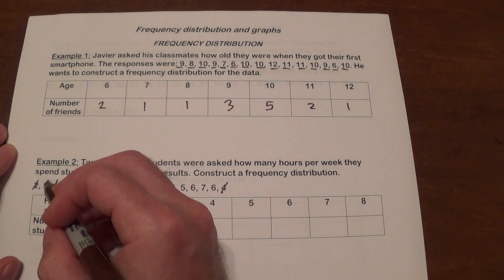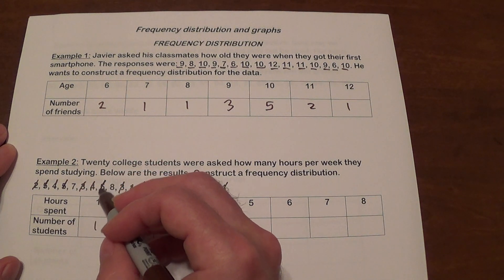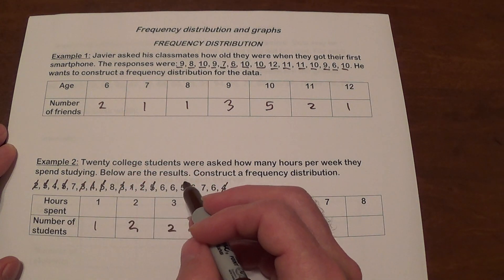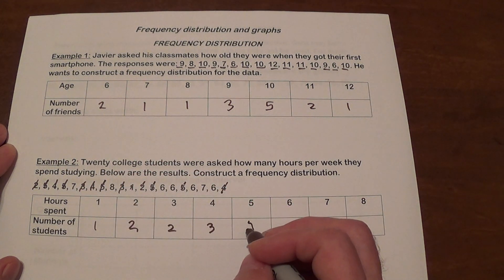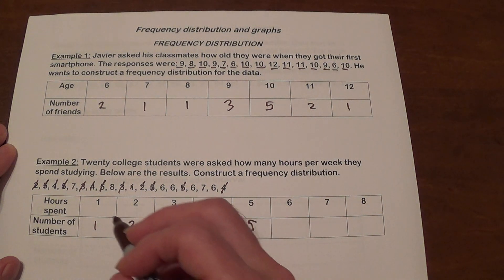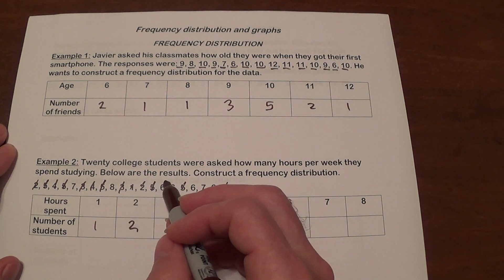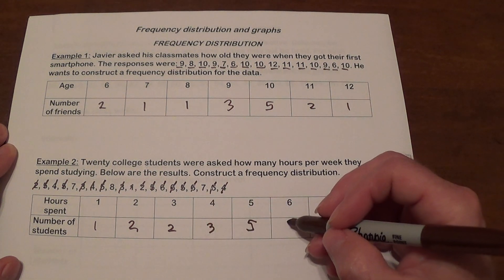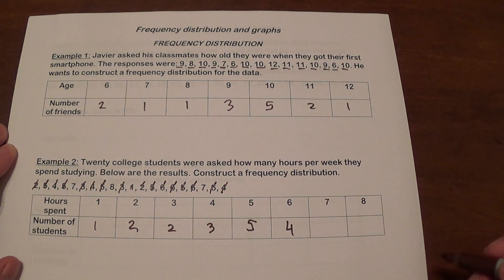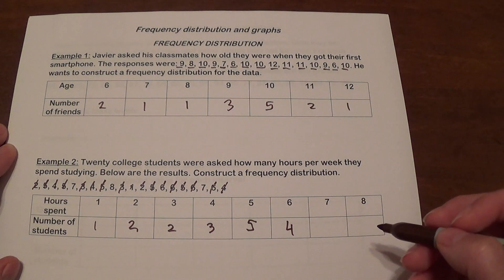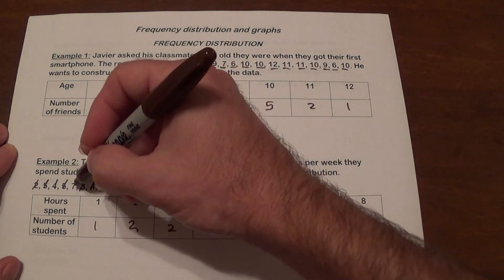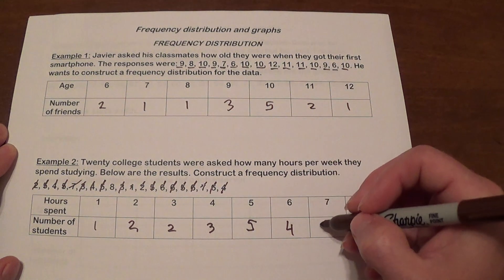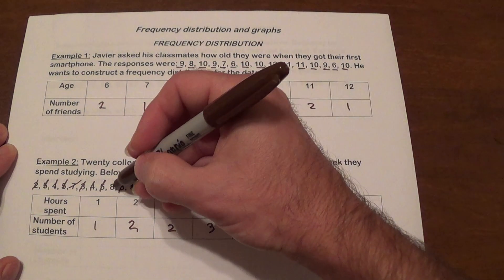Four. There's one. Two. Three. Five. One. Two. Three. Four. Five. Six. One. Two. Three. Four. Seven. We have one. Two. And eight. We got one.